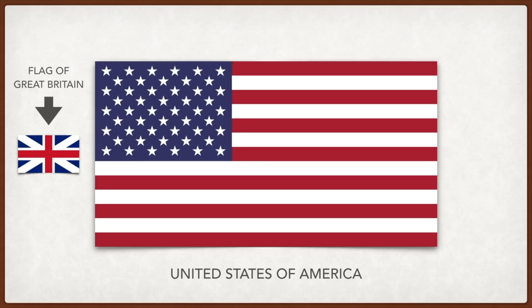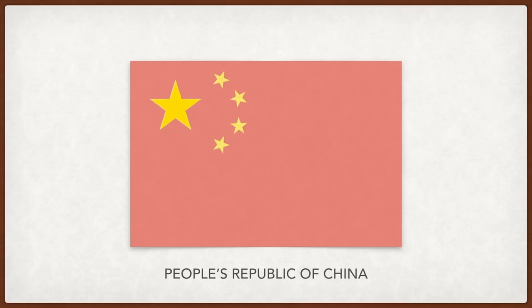China: the red represents the communist revolution, the four smaller stars the Chinese people uniting around the bigger star, which represents the Communist Party.